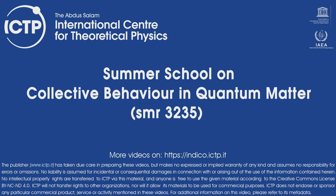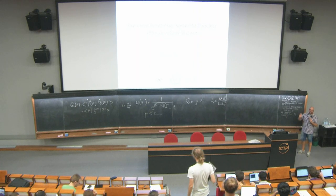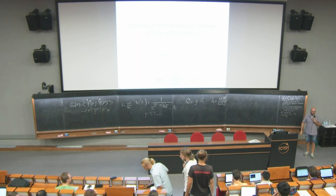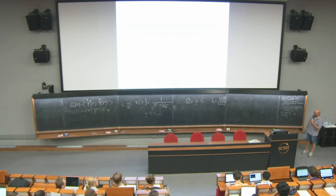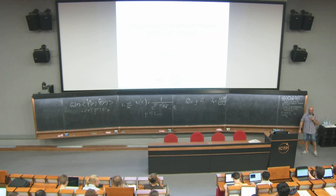If you need to print, please print only if strictly necessary because it costs us. You need to send an email to printing@ictp.it with the poster in PDF form attached, stating the format — A2, A1, whatever — and add the sentence 'cost to be charged to summer school SMR 3235.' You should send this at latest by Monday, because Wednesday is the poster session. If you send it on Tuesday it's not guaranteed you'll get your poster.